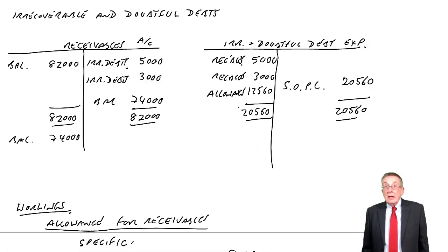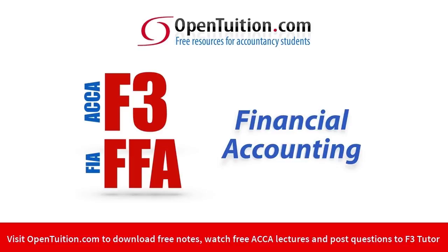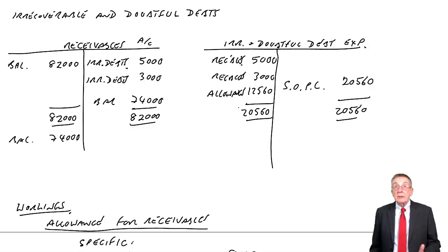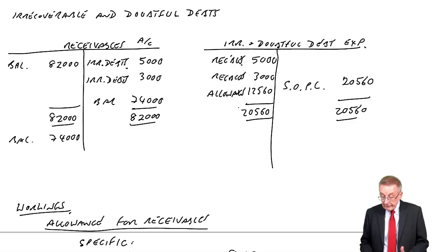This is the third and final lecture on Irrecoverable and Doubtful Debts. In the last lecture we went through example two — it's still on the screen. I'm now going to look at example three, which is the same business, Scylla, but we're going into the second year, so I can show you the full story.